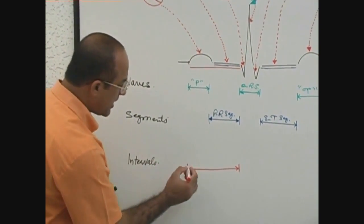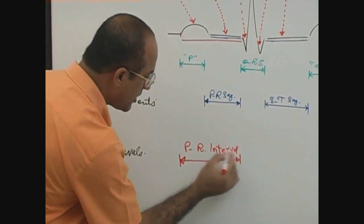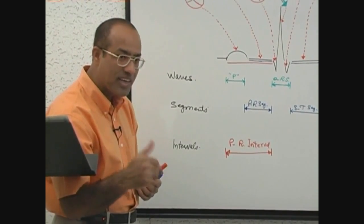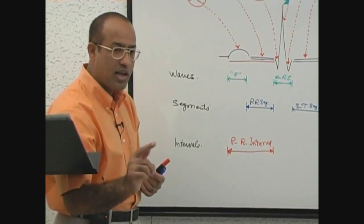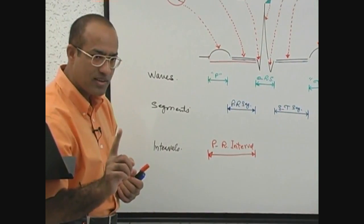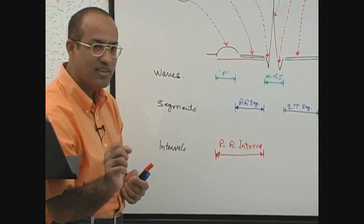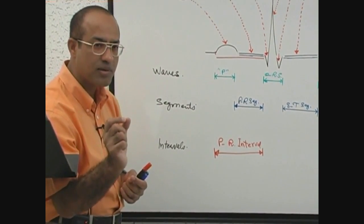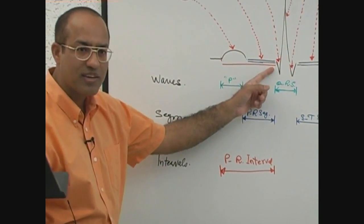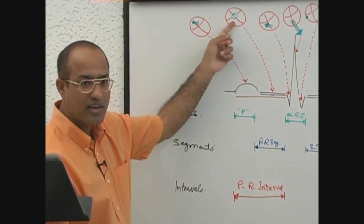So the PR interval is the duration during which current starts from the SA node, depolarizes the atria making the P wave, then the current enters into the AV node and passes through it — during which time the PR segment is made. As soon as the AV node releases the current into the ventricle, the machine starts making the QRS complex and the PR interval terminates. PR interval includes two electrical events: atrial depolarization plus conduction through the AV node.